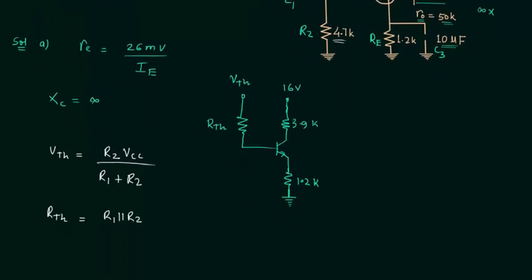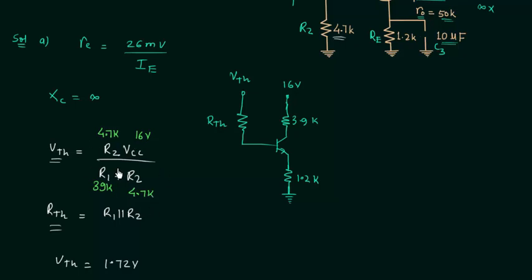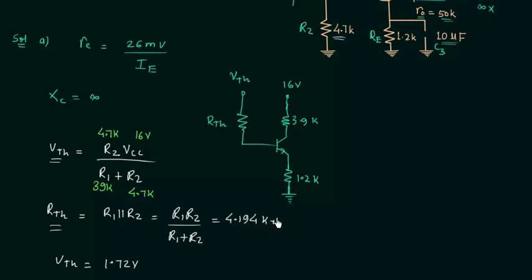We have already discussed these points in the voltage divider bias lecture. Calculating quickly: Vth equals R2 times Vcc divided by R1 plus R2, with R2 equal to 4.7kΩ, Vcc equal to 16V, and R1 equal to 39kΩ, giving Vth equal to 1.72 volts. Rth equals R1 parallel R2, which is R1 multiplied by R2 divided by R1 plus R2, giving Rth equal to 4.194kΩ.